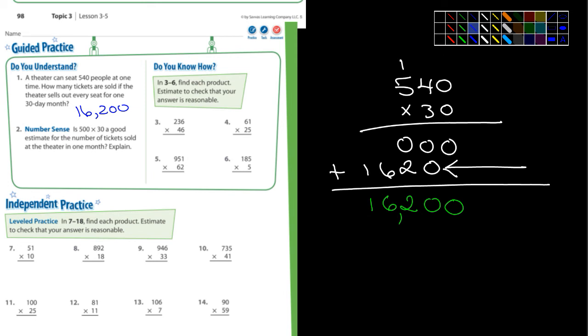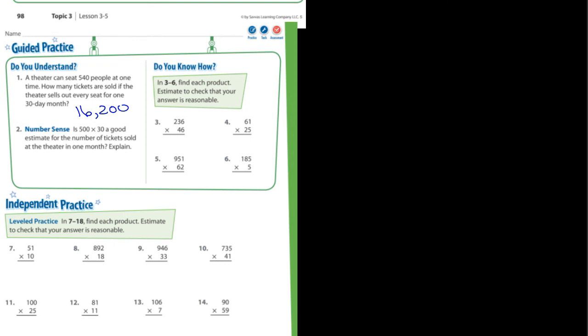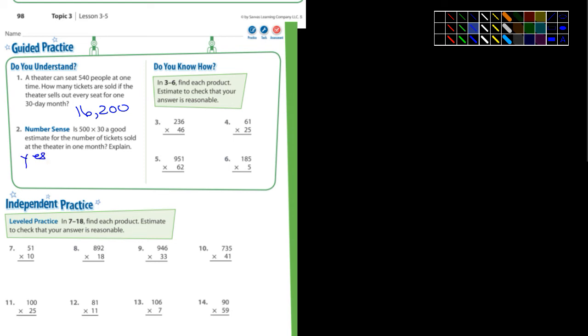And then it asks the question for number two. It says, is 500 times 30 a good estimate for the number of tickets sold in one month? And explain, I would say yes, because 500 is close to 540. If they'd pick 600, that wouldn't have worked so well.